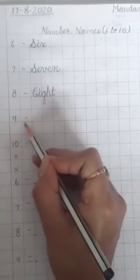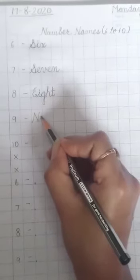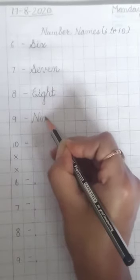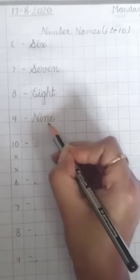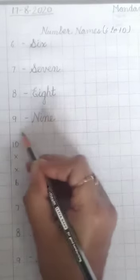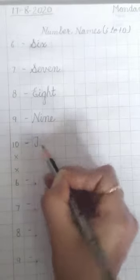Then write number 9 here, put a small dash, write capital N, then small I, N, E. N-I-N-E, nine. Now leave a line, write number 10, put a small dash here, then write capital T like this, small E, N. T-E-N, ten.